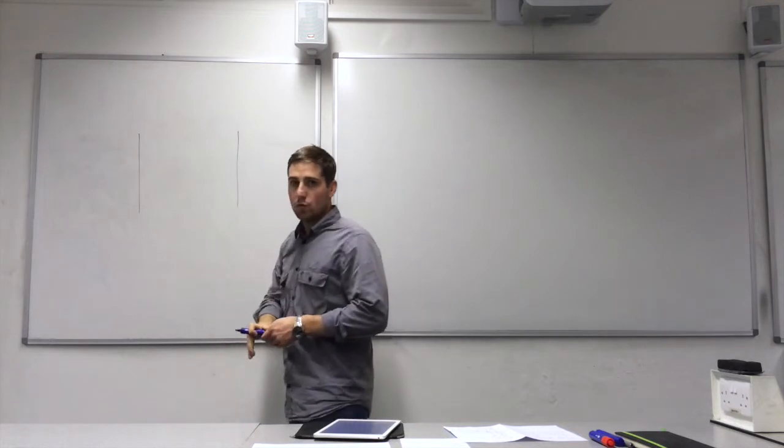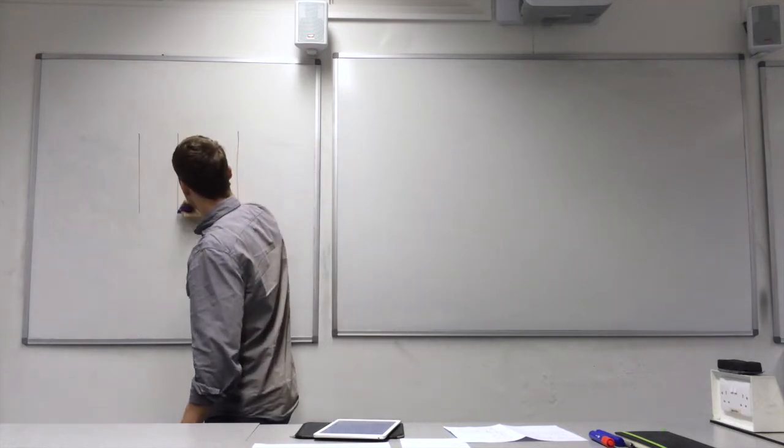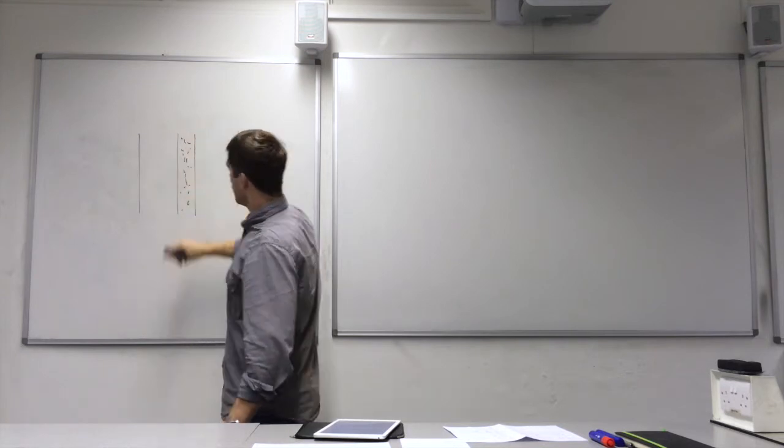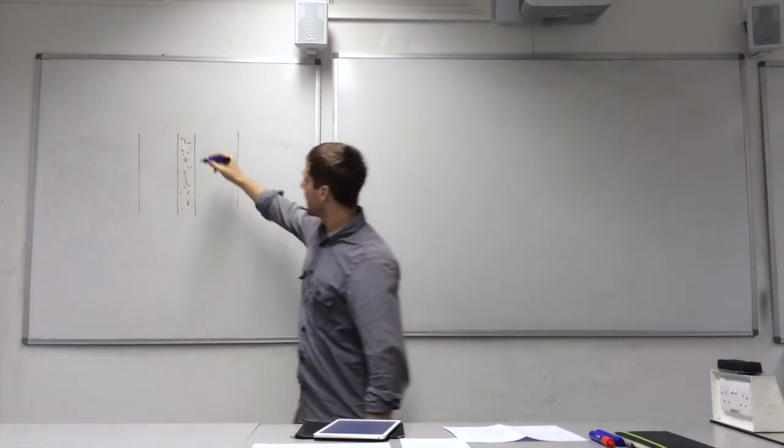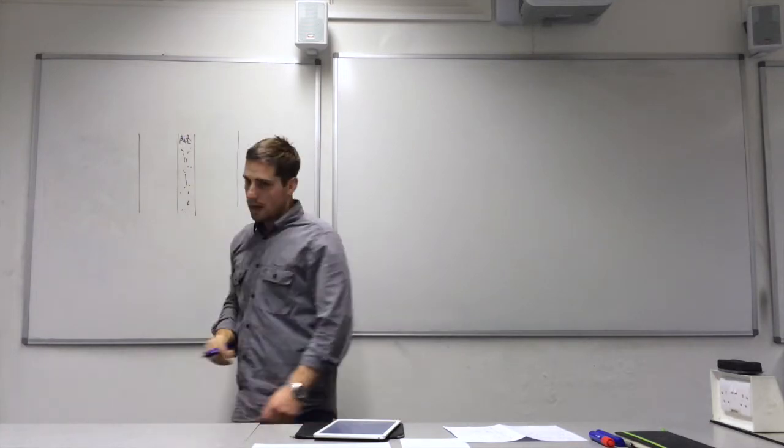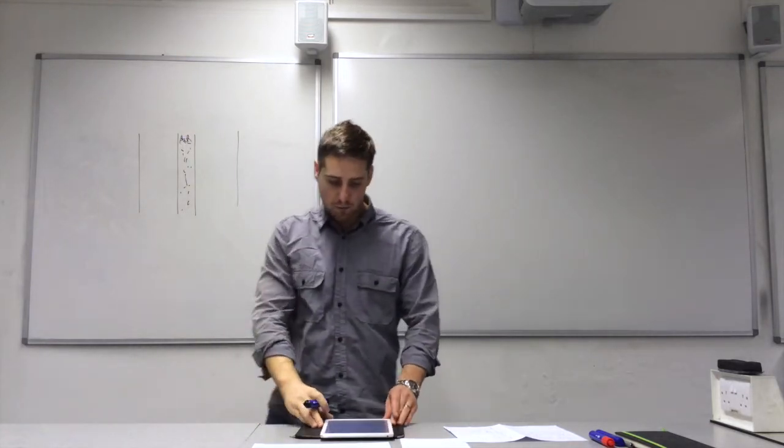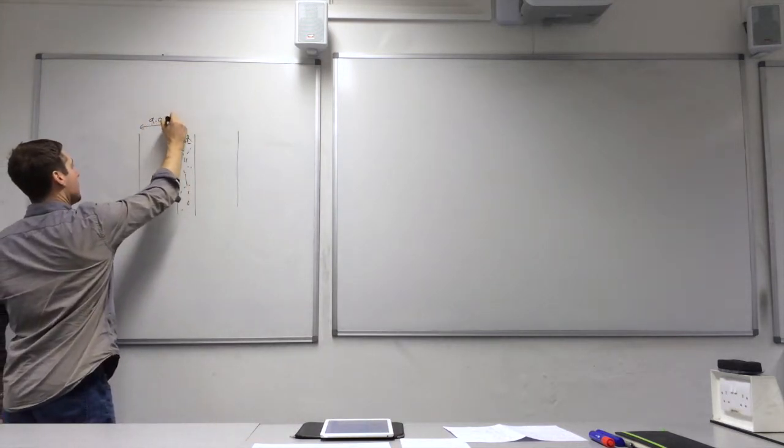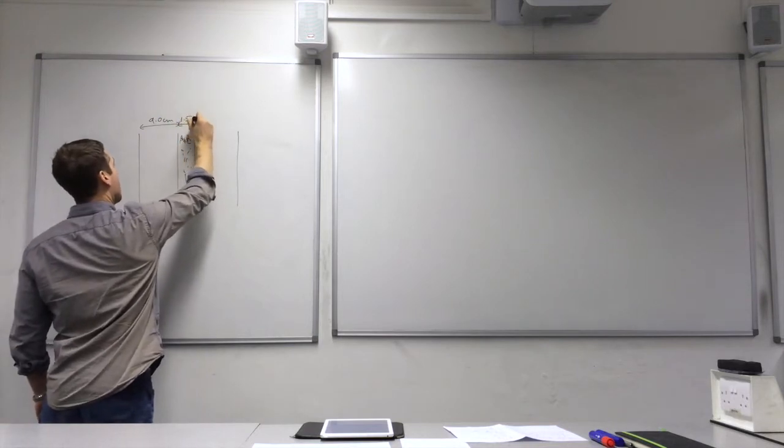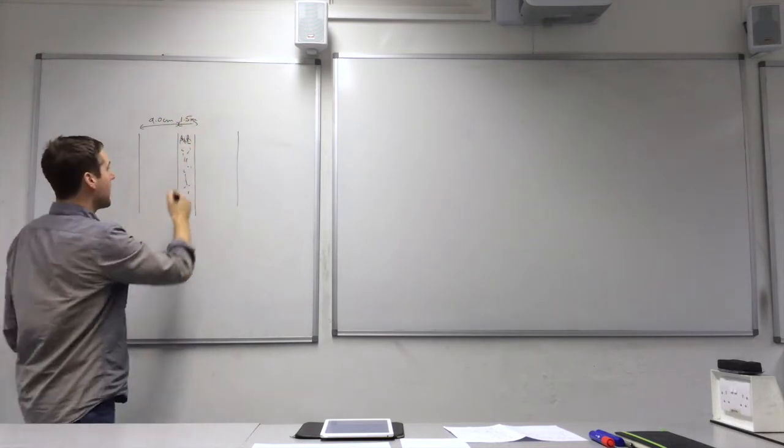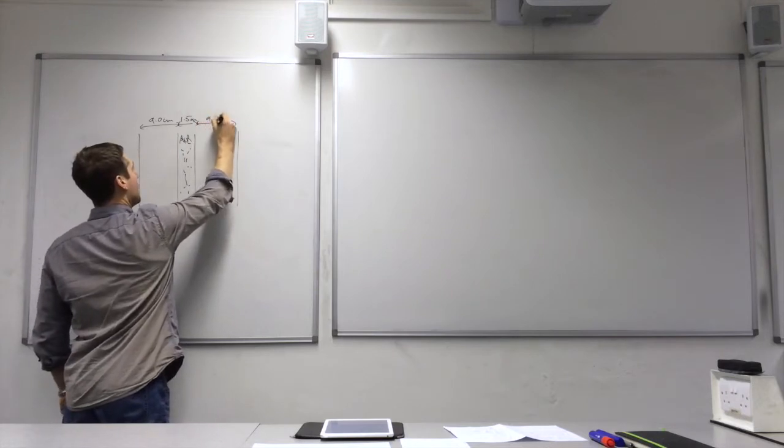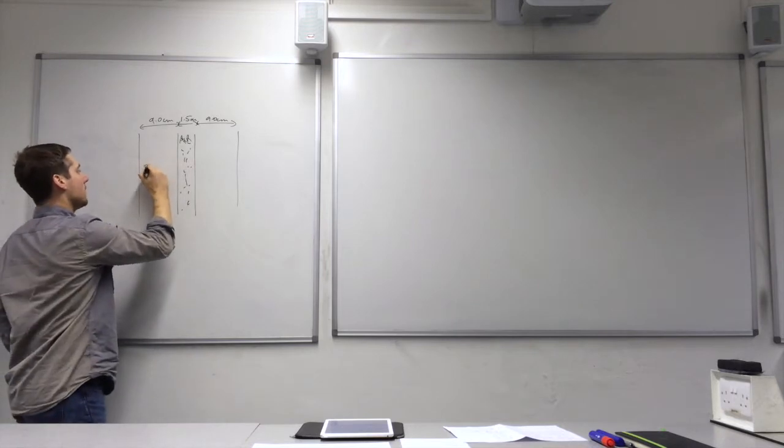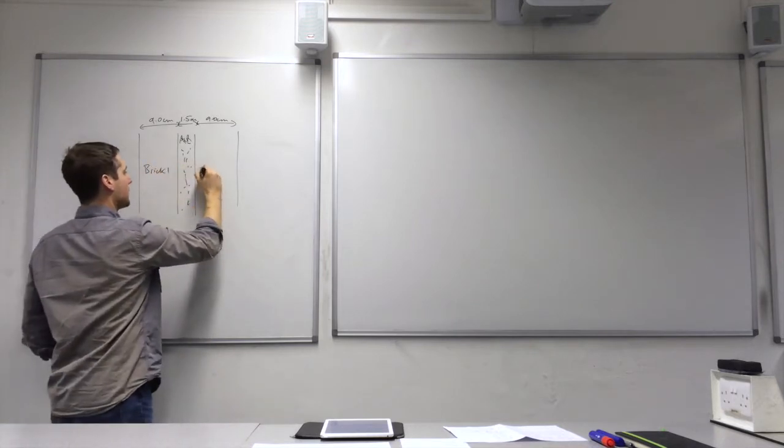We have our wall made out of brick, and in the middle we've got an air gap there. The dimensions of this wall are a 9cm thick brick here, a 1.5cm air gap, with a 9cm brick on the other side.